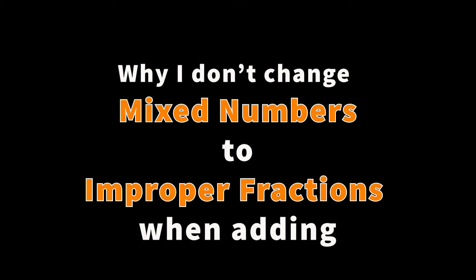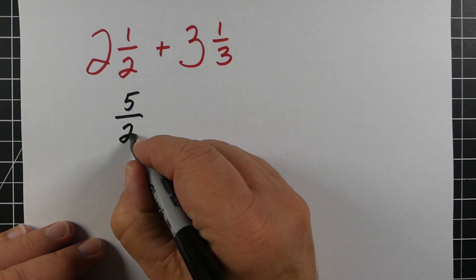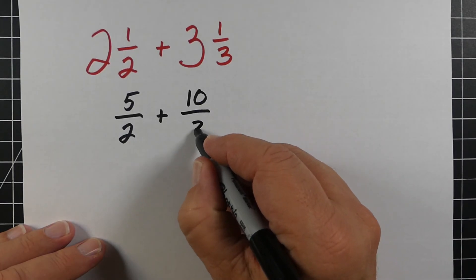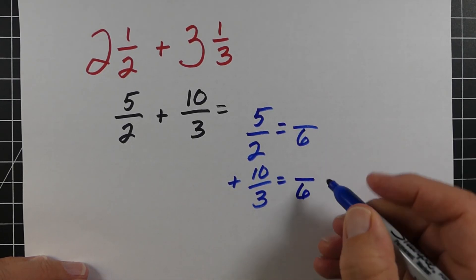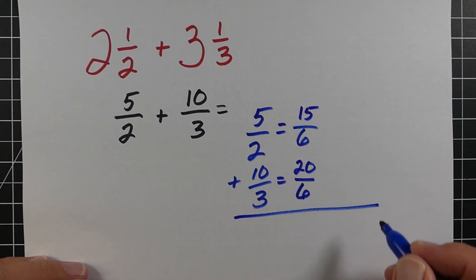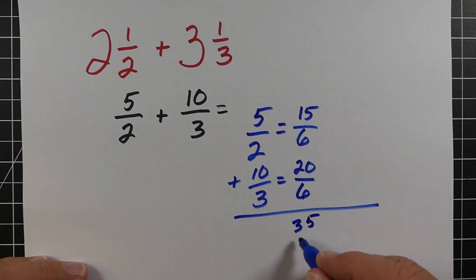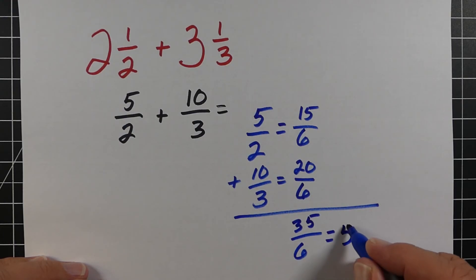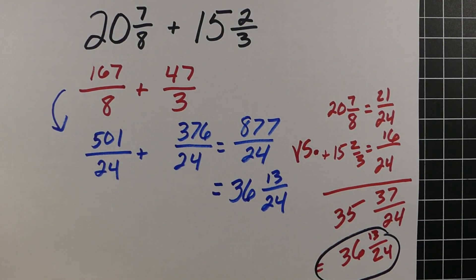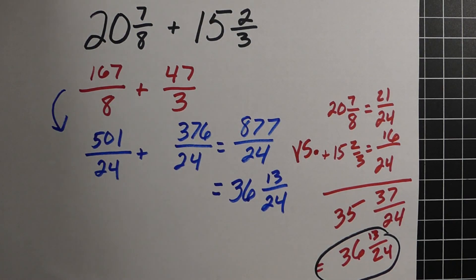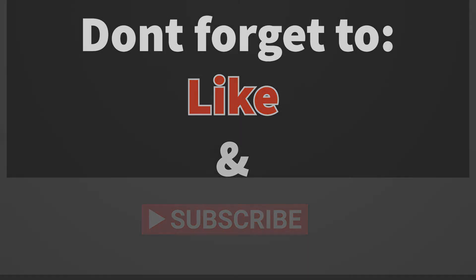A lot of teachers and students like to change mixed numbers to improper fractions when they add, and this does work. The reason I don't prefer it is because it creates a lot of extra work and increases the chance of making a mistake. For simple problems, like converting to 5/2 and 10/3 with a common denominator of 6, you get 35/6 which equals 5 and 5/6 — not too bad. But for more complex problems, you end up with numbers like 167 and 47 in the numerator and hundreds in the common denominator, where keeping them as mixed numbers looks much simpler. See you soon.